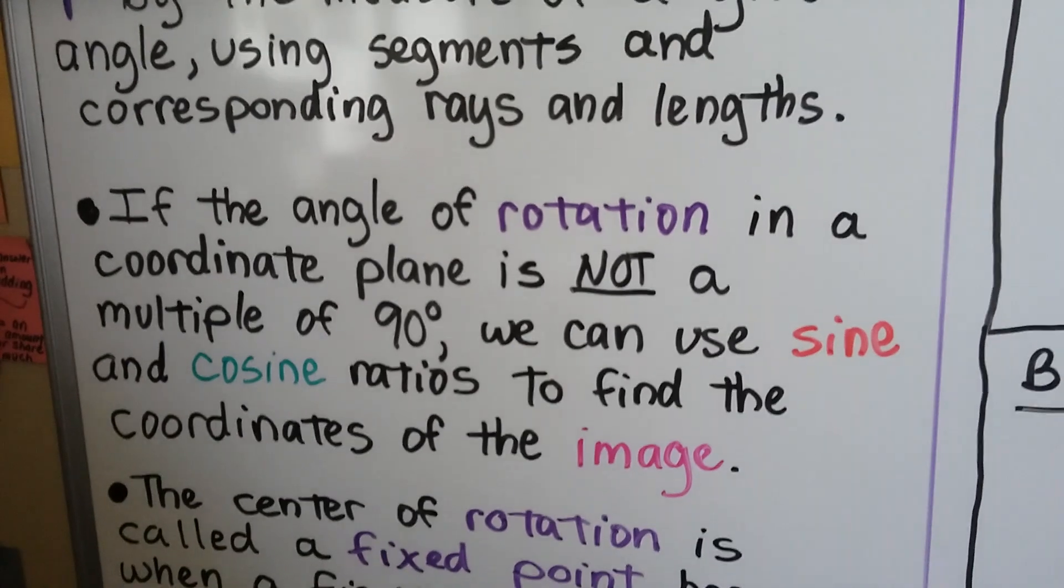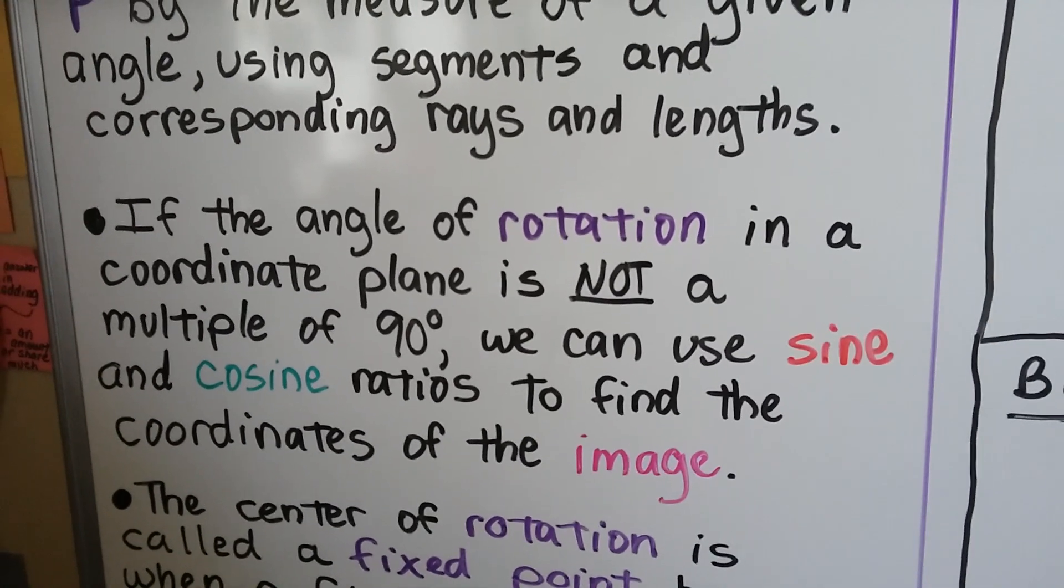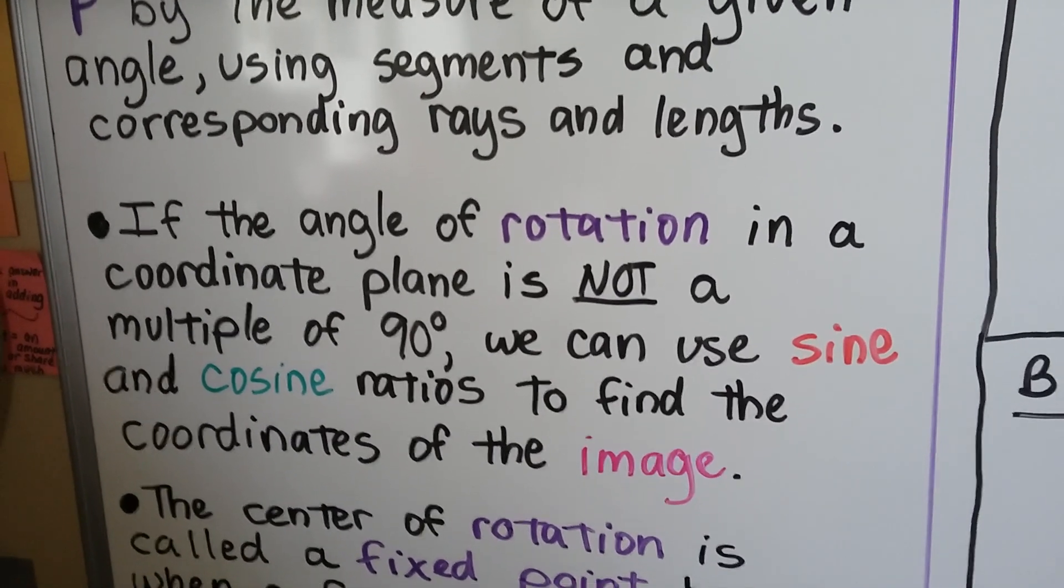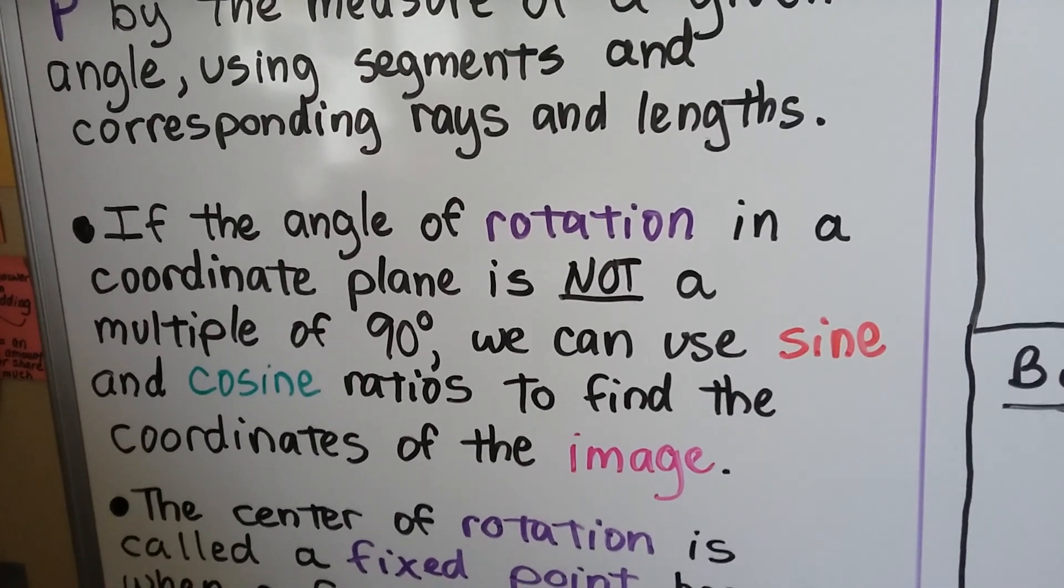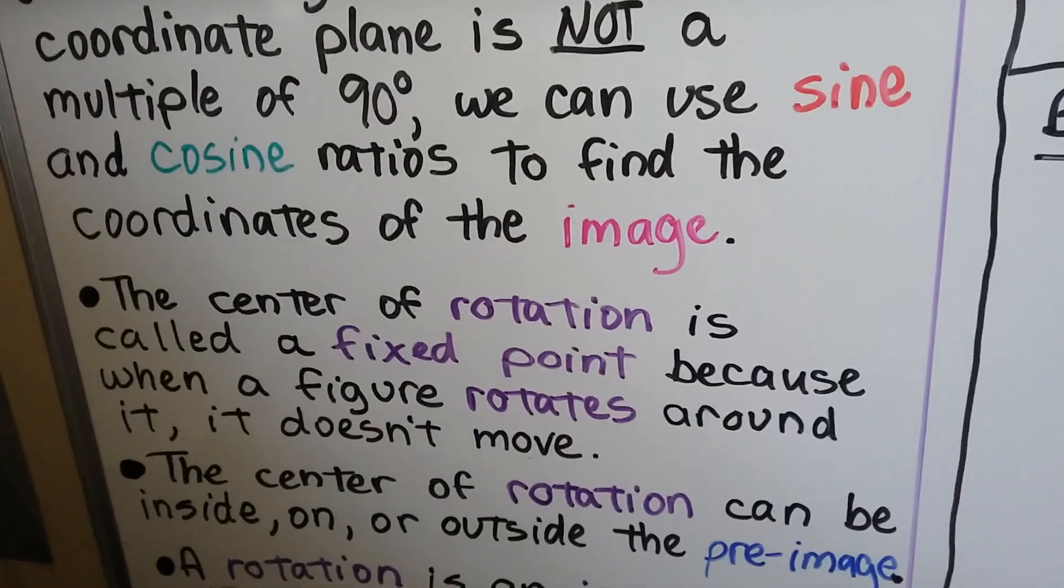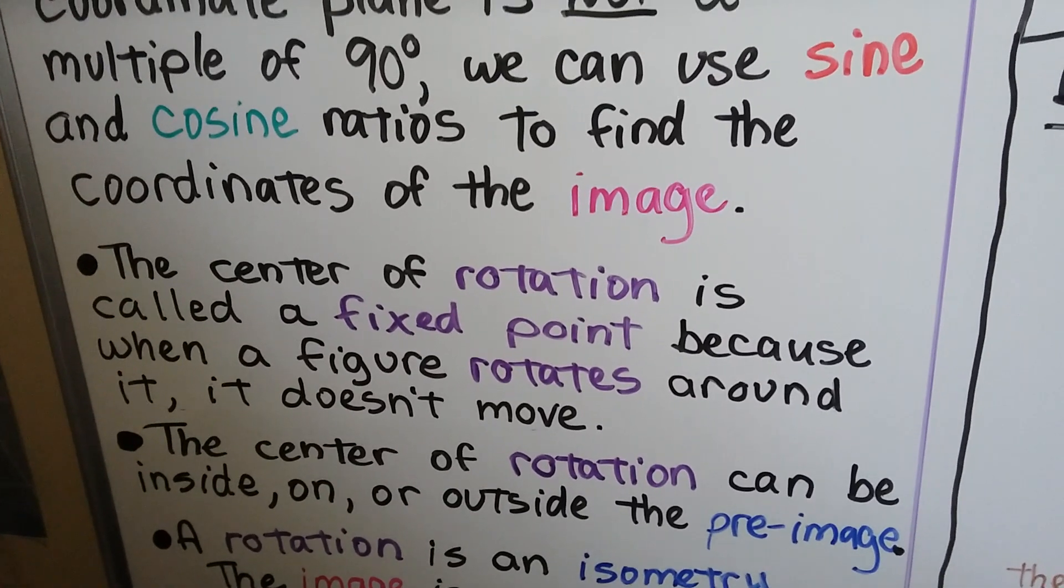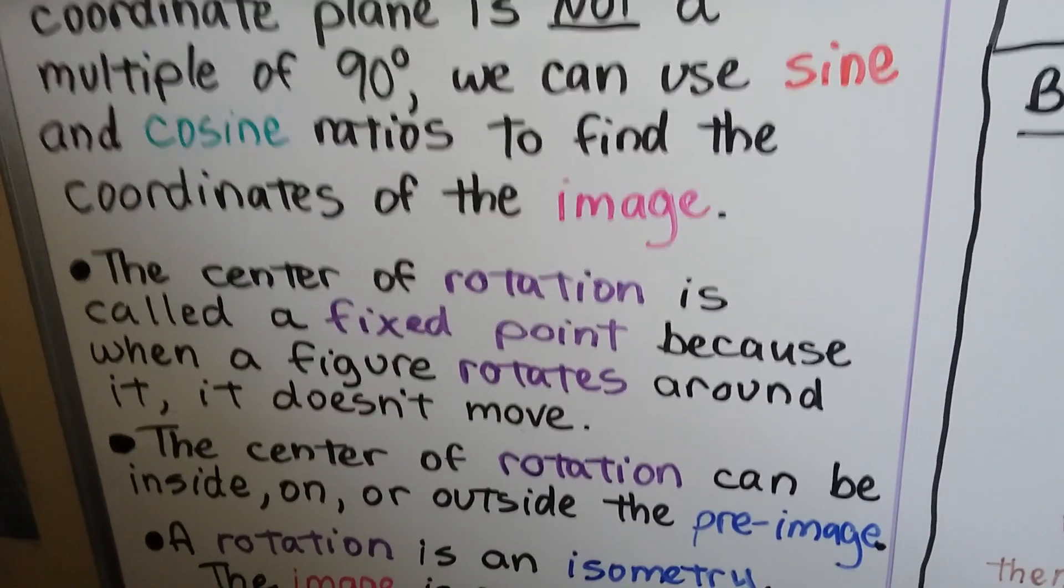If the angle of rotation in a coordinate plane is not a multiple of 90 degrees, we can use sine and cosine ratios to find the coordinates of the image. The center of rotation is called a fixed point because when a figure rotates around it, it doesn't move.